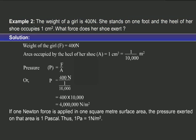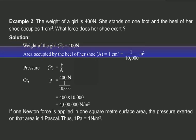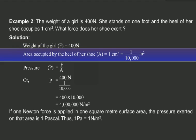Here is the solution. Students, the weight of the girl, or the force, is equal to 400 Newton. The area occupied by the heel of the shoe, that is A, is equal to 1 centimeter square. Converting it into meter square, we divide it by 10,000. Hence, area is equal to 1 by 10,000 meter square.